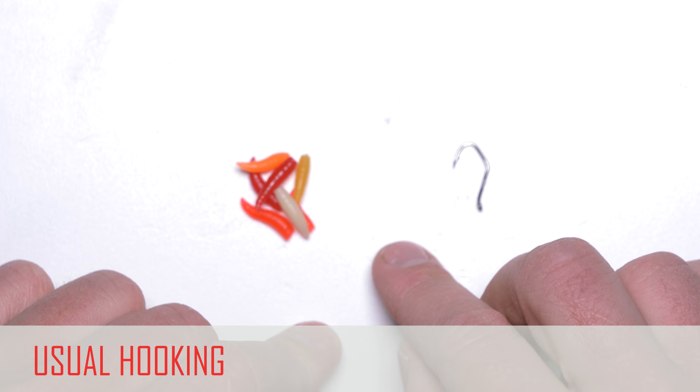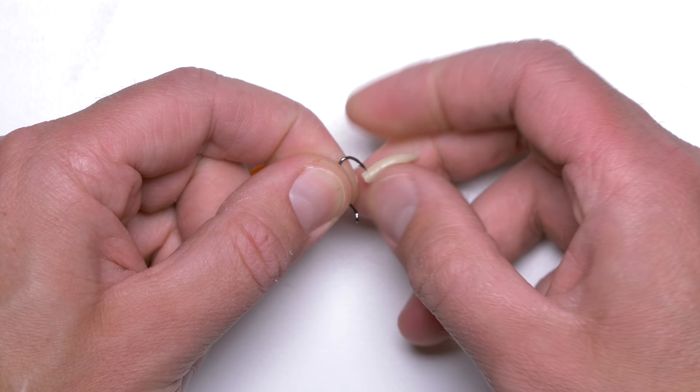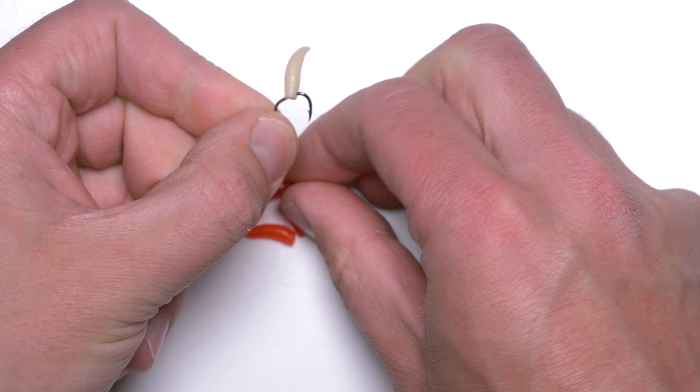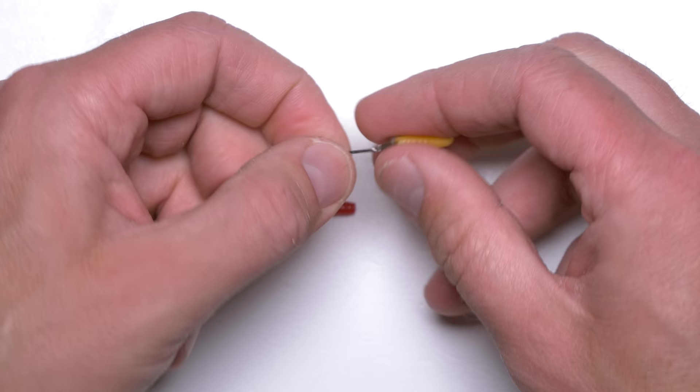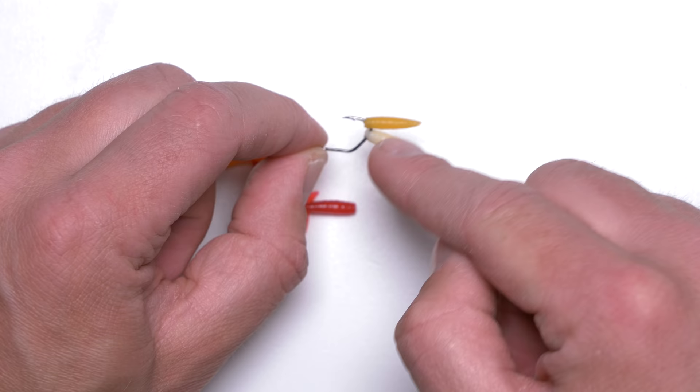The most basic method to put maggots onto the hook is just to thread them through the fatter end. Most people use this kind of presentation when float fishing. And I have to say that this type of hooking is okay, but you can improve it a little bit as well.